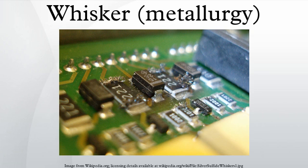Metal whiskering is a phenomenon which occurs in electrical devices. Tin whiskers were noticed and documented in the vacuum tube era of electronics early in the 20th century, in equipment which used pure, or almost pure, tin solder in their production. It was noticed that small metal hairs or tendrils grew between metal solder pads, causing short circuits.